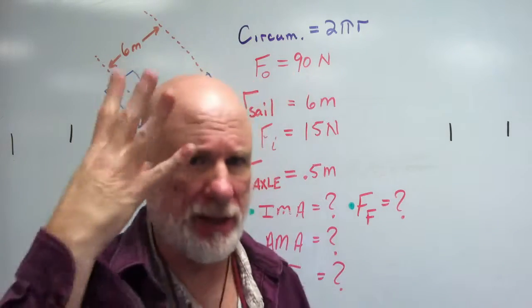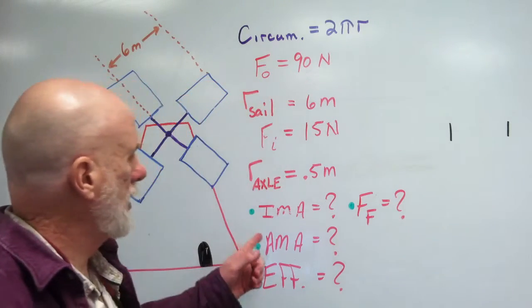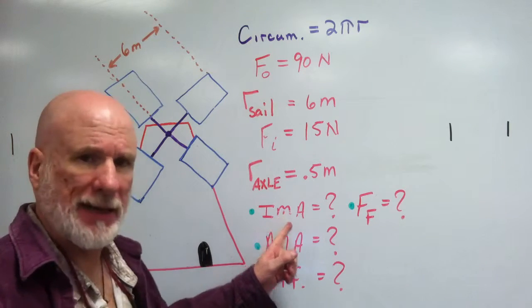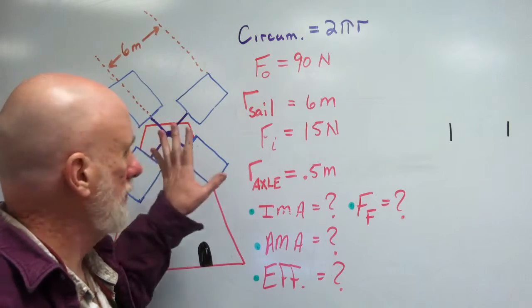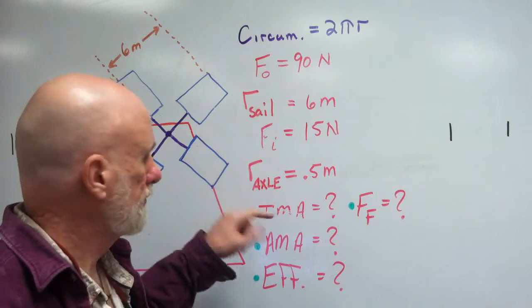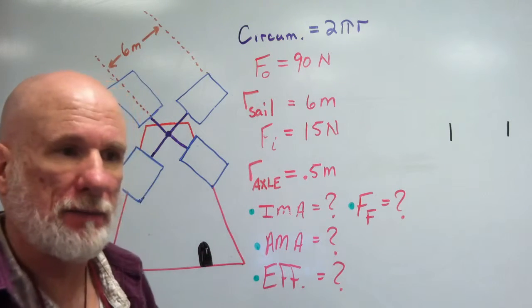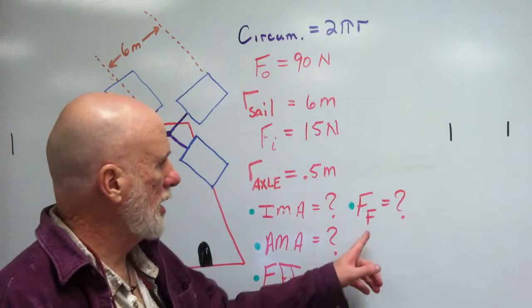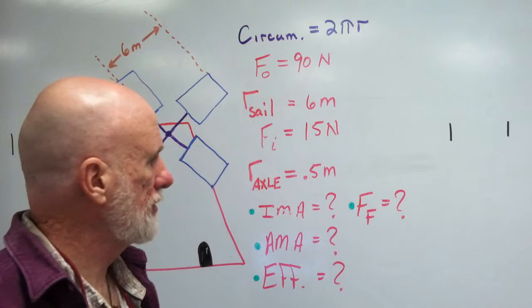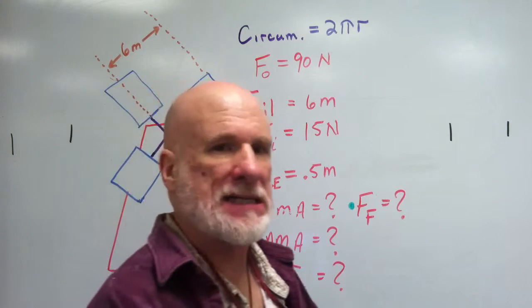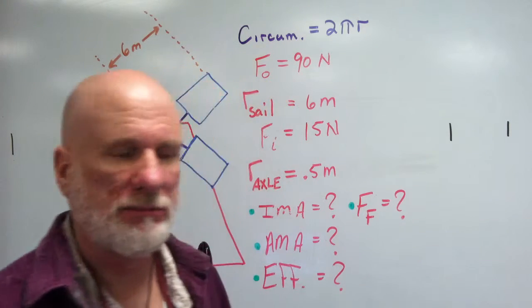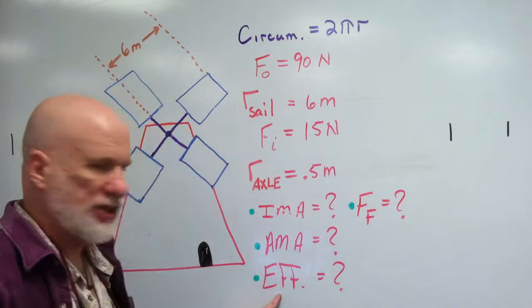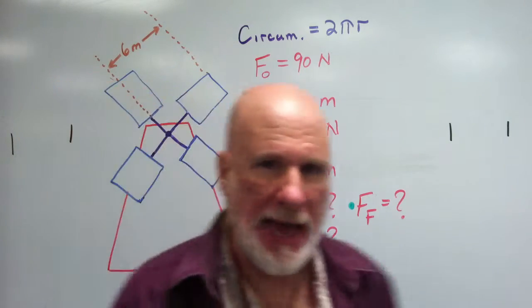And so, this is the problem. I want to know four things. I want to know the ideal mechanical advantage of this machine. It's a machine. I want to know the actual mechanical advantage, the AMA. I want to know the frictional force that, why isn't it 100% efficient? What's the friction there? The efficiency, I want to know. Okay, so, this is what I have.